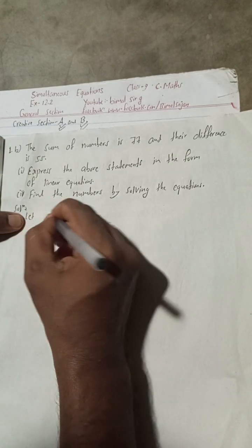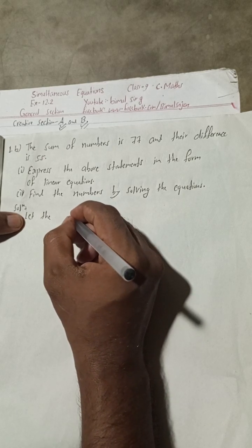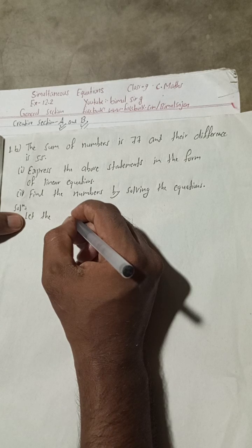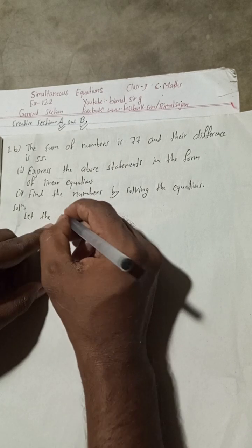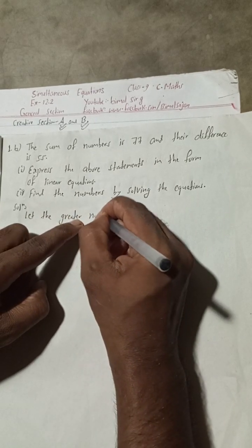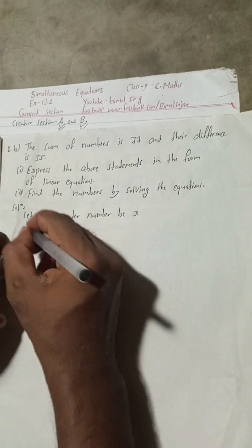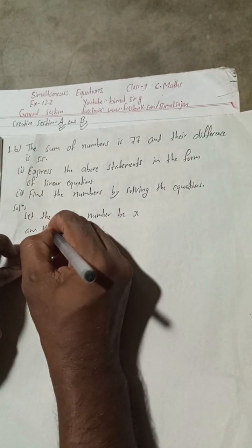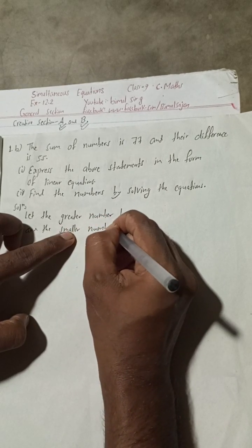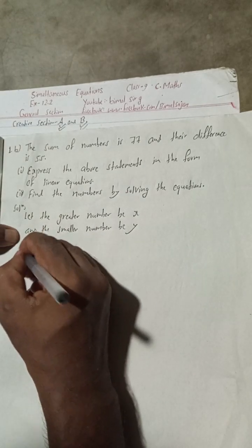Suppose, let the two numbers be x and y. Let the greater number be x and the smaller number be y.